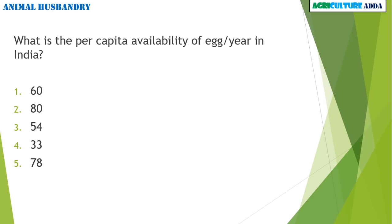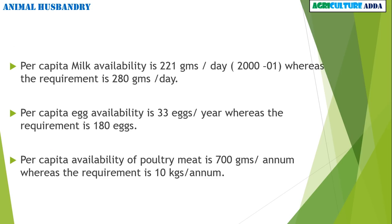In the animal husbandry section: What is the per capita availability of eggs per year in India? 60, 80, 54, 33, or 78? The answer is 33 eggs. Per capita milk availability is 221 grams per day, whereas the requirement is 280 grams per day. Egg availability is 33 eggs, whereas the requirement is 180 eggs. Availability of poultry meat is 700 grams, and its requirement is 10 kg per year.